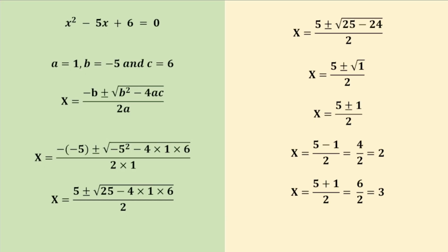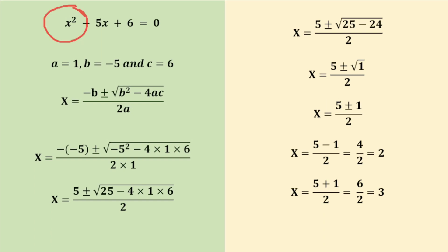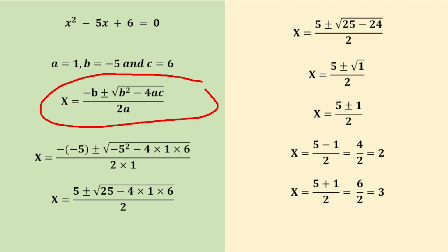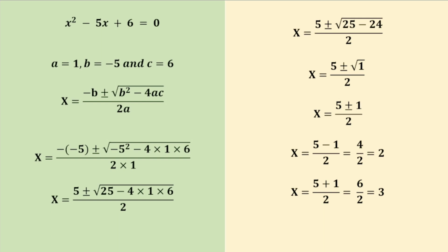Let us consider a numerical example to show how to solve a quadratic equation using the quadratic formula: x² − 5x + 6 = 0. Here the value of a is equal to the coefficient of x², which is 1; b is −5, the coefficient of x; and c is 6, the constant. The quadratic formula is x = (−b ± √(b² − 4ac)) / 2a. The nice thing about this formula compared to other methods is that we are just plugging into a formula — there are no steps to remember and thus fewer opportunities for mistakes.